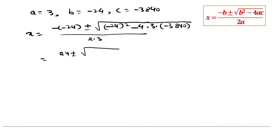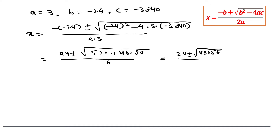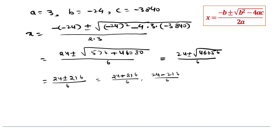Simplifying, we get 24 plus or minus under root of — 24 squared is 576, and minus times minus becomes plus, and the multiplication gives 46080 — so under root of 46656, all over 6. And as the square root of 46656 is 216, we get 24 plus or minus 216 over 6, giving 240 by 6 or minus 192 by 6.